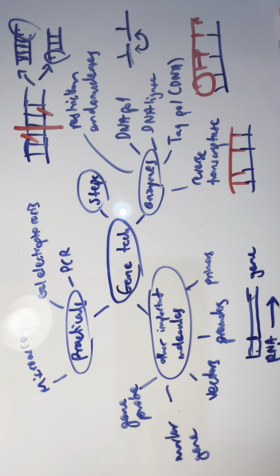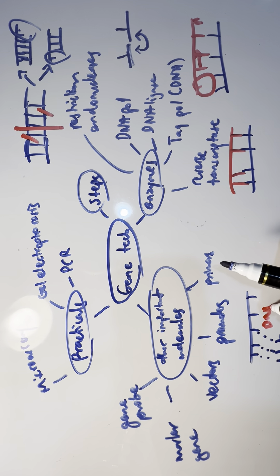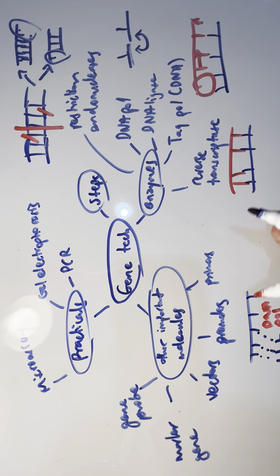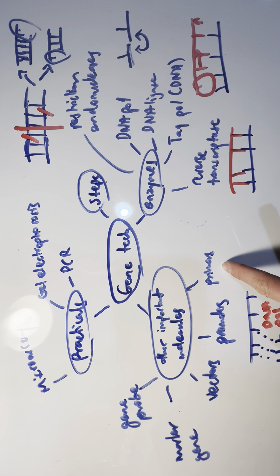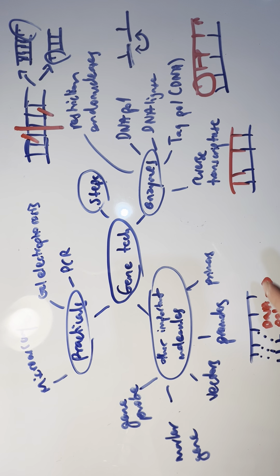Primers, on the other hand, are not part of the gene itself. They are short strands of RNA or DNA that have complementary base pairs at the start of a sequence, and they help DNA polymerase bind to the primer and start synthesizing. Primers are involved with transcription and help DNA polymerase initiate replication.